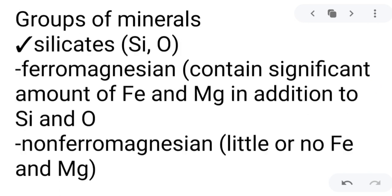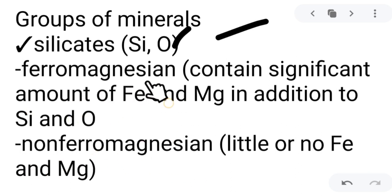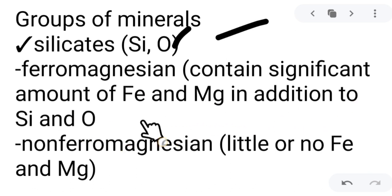Now let us proceed to the groups of minerals. First, we have silicates — minerals containing silicon and oxygen. There are two classifications: ferromagnesian silicates, which contain significant amounts of iron and magnesium in addition to silicon and oxygen, and non-ferromagnesian silicates, which contain little or no iron and magnesium at all — only silicon and oxygen.